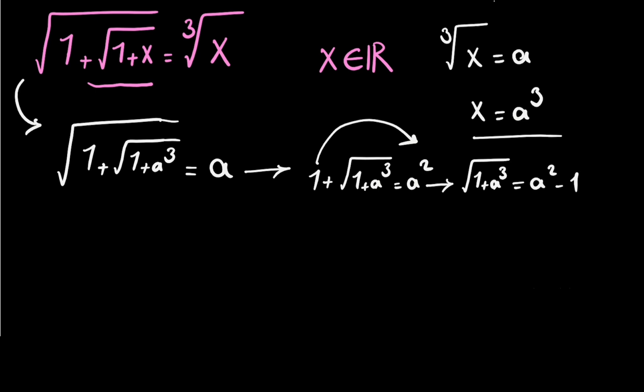Again, if we square both sides, 1 plus a cubed will equal a squared minus 1, all squared.